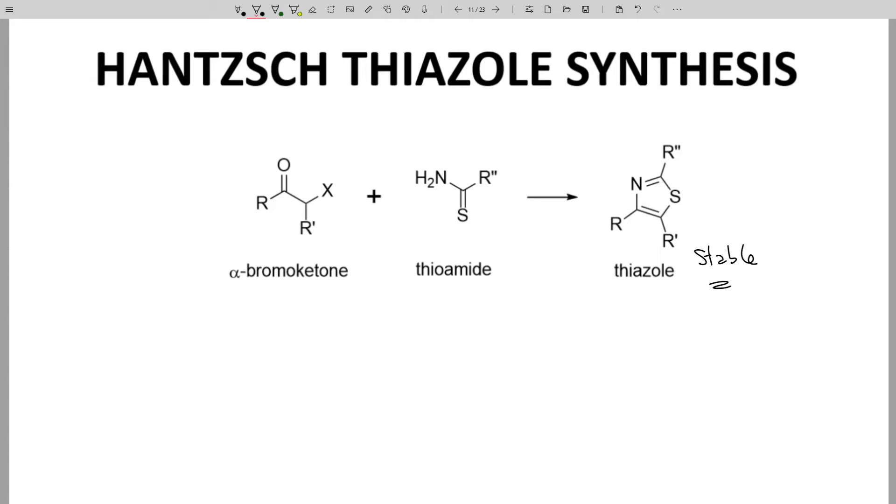The starting materials for this reaction include a ketone with a halogen X. It could be a chlorine, a bromine, or an iodine on the alpha carbon. The other starting material is a thioamide, which is just a regular amide with a sulfur in place of the oxygen of the carbonyl. When these two reagents are heated together, the first step is an SN2 reaction between the sulfur of the thioamide and the alkyl halide at that alpha carbon.